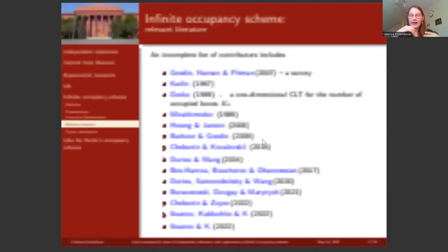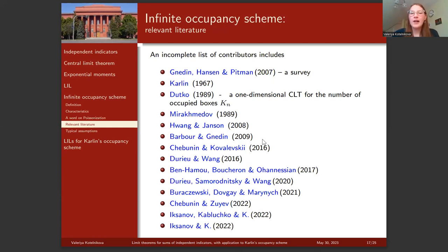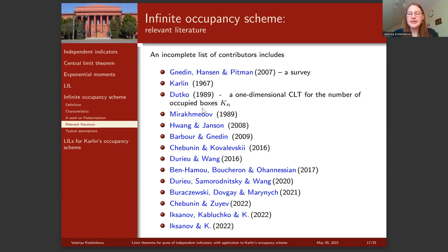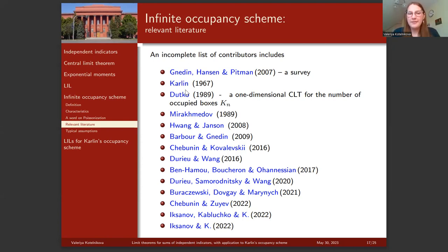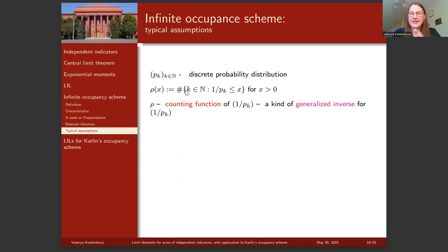We used exactly this approach for the law of iterated logarithm for the infinite occupancy scheme. Results are presented for the deterministic version, but the technique was to first prove the law for the Poissonized version, since there we have a sum of independent indicators. This infinite occupancy scheme has been investigated by many contributors; important results appear in a 2007 survey by Gnedin, Hansen, and Pitman. In 1989, Dutko proved a one-dimensional CLT for the number of occupied boxes.